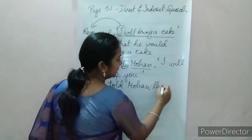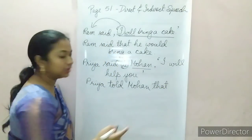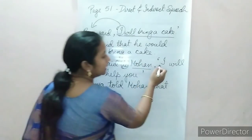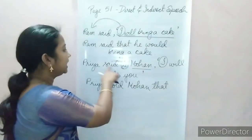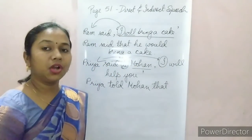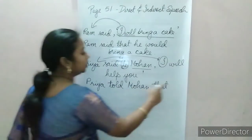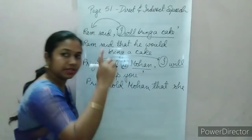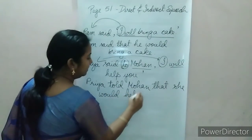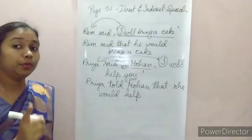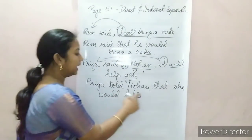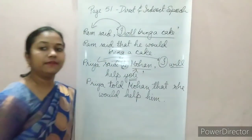Then change the pronoun: 'I' refers to Priya, so use 'she'. 'Will' changes to 'would'. 'You' refers to Mohan, so change it to 'him'. Final sentence: Priya told Mohan that she would help him. This is how we change direct speech — pronoun changes according to who is speaking and who is listening.